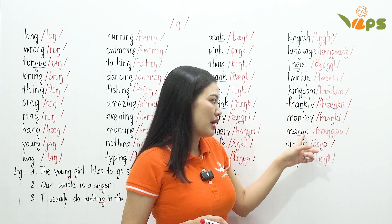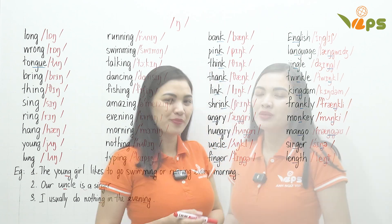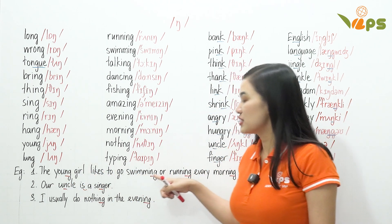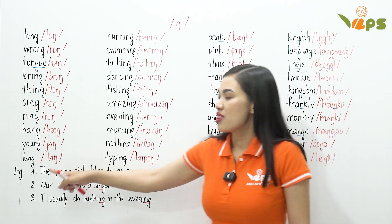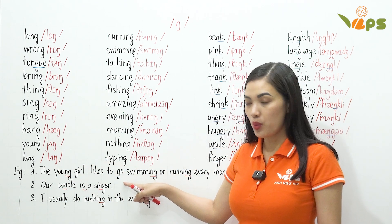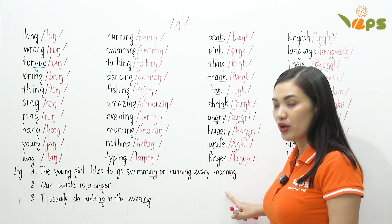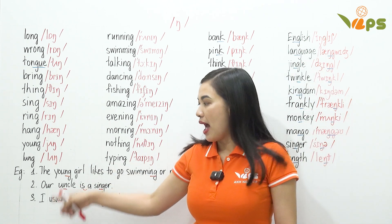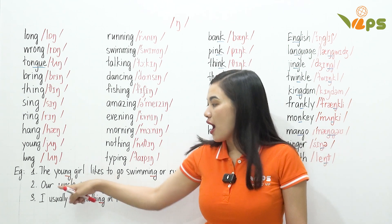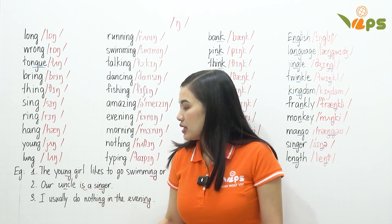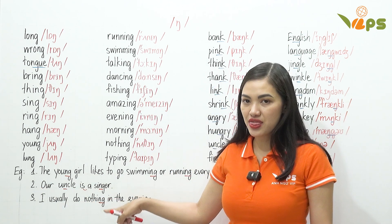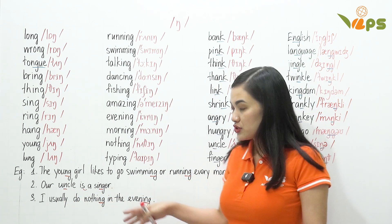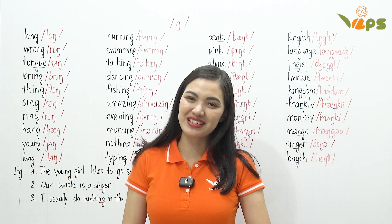And again: English, language, jingle, twinkle, kingdom, frankly, monkey, mango, singer, length. Now let's go to the examples. Number one: The young girl likes to go swimming or running every morning. Two: Our uncle is a singer. Three: I usually do nothing in the evening.